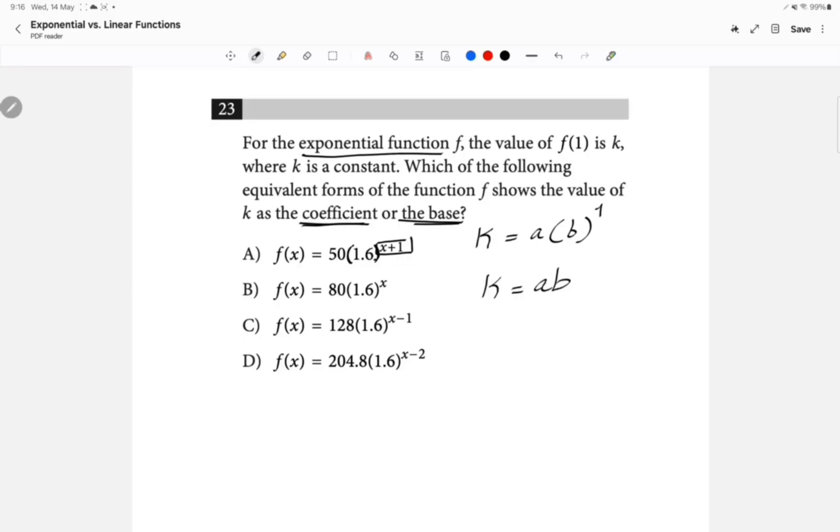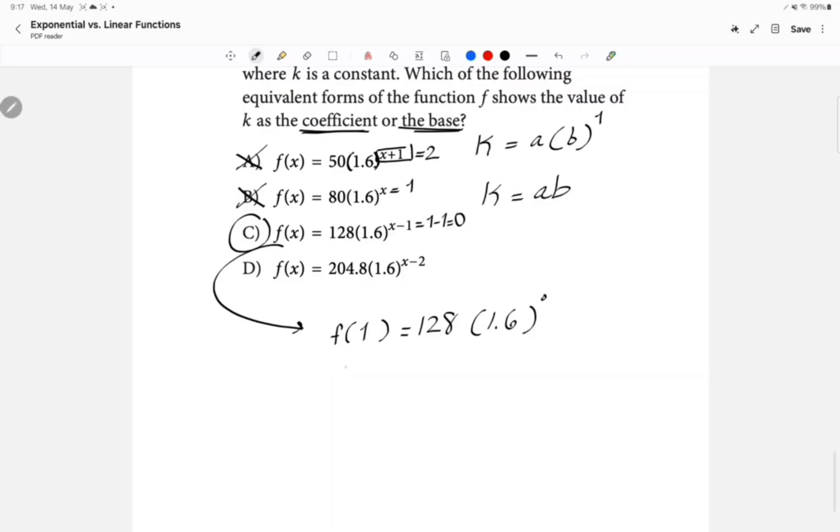The power has to be 0. Now, we already know that X is 1. So here the power is going to be 2, so it's not choice A. Here the power is going to be 1, so it's not choice B. Here it's going to be 1 minus 1, which is 0, which is what you want. Because essentially what you're going to have is f of 1 equals 128 times 1.6 to the power of 0. So essentially f of 1 equals 128. And so f of 1 is just K. So K is equal to the coefficient or is equal to the base essentially.